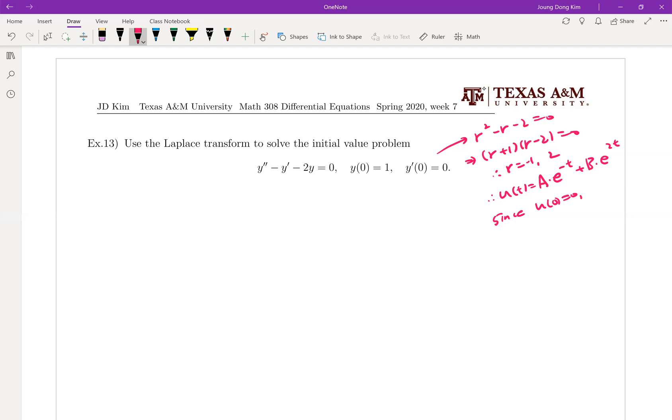Since u0 was 0 and u prime 0 was 0 then your ut and your coefficient a and b can be defined easily is equal to 2 third e to the minus t plus 1 third e to the 2t. So we're going to compare this answer.